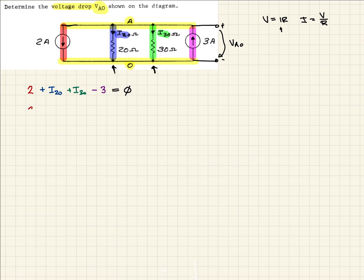If we rewrite that, the current source just stays the same. But now, our I-20 is going to be VAO over 20. And similarly, the 30-ohm branch is going to be VAO over 30. And then, the final current source stays the same. That should all equal to 0. So now we've derived our equation in relation to this circuit. We see we have one equation, one unknown.